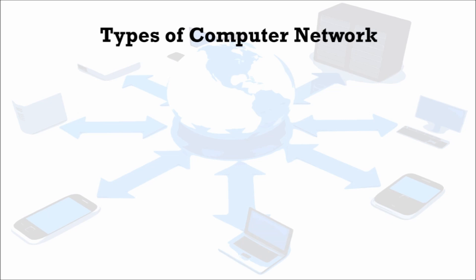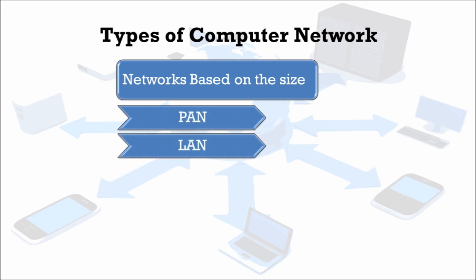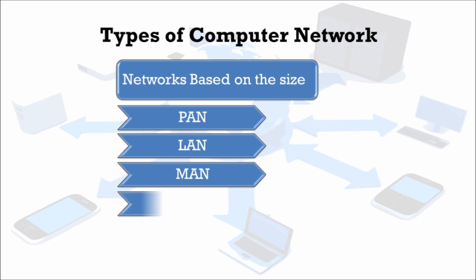The types of computer network — we can classify the computer network based on their size. They are: PAN (Personal Area Network), LAN (Local Area Network), MAN (Metropolitan Area Network), and WAN (Wide Area Network). Now let's start discussing each of them.